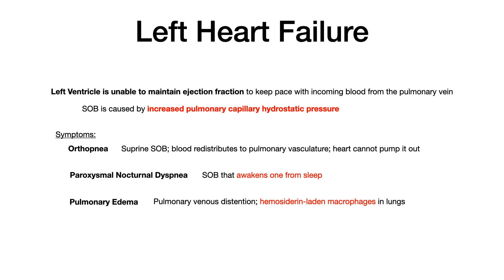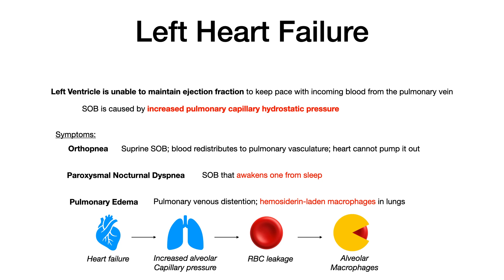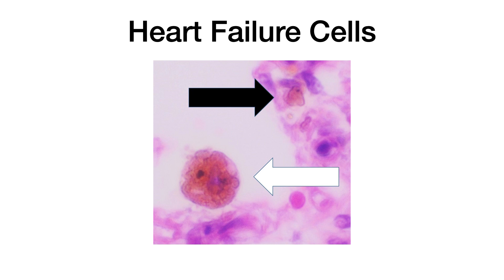A key finding — and a buzzword on your exam — is hemosiderin-laden macrophages. In left-sided heart failure, there is increased alveolar capillary pressure, which causes red blood cells to leak out when they otherwise shouldn't. The body's response is to have macrophages engulf those excess red blood cells. When a macrophage engulfs a red blood cell, it picks up the hemosiderin from that red blood cell. These are visible under a microscope as heart failure cells — macrophages laden with hemosiderin from leaking alveolar capillary red blood cells.